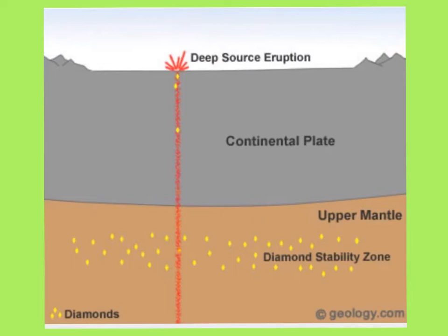Diamonds have also been weathered and eroded from some of these pipes. As weathering causes a wearing away of Earth's crust, some of these pipes could be exposed and those diamonds would get washed down into streams or to the coast. The formation of natural diamonds requires very high temperatures and pressures — at least 2000 degrees Fahrenheit. The critical temperature-pressure environment for diamond formation is not present around the world.